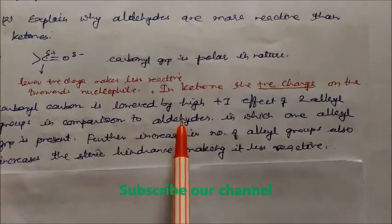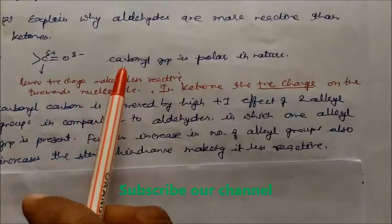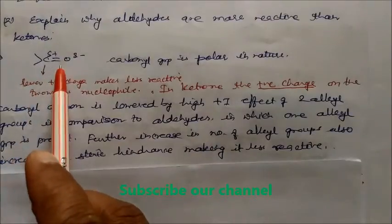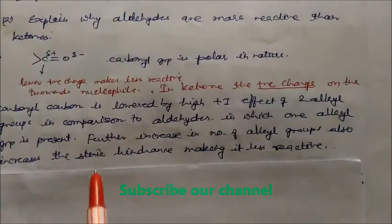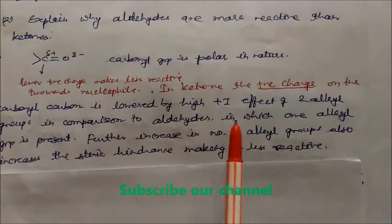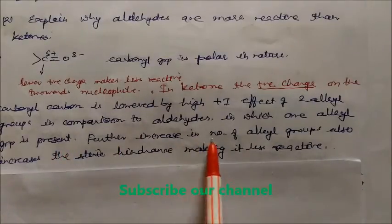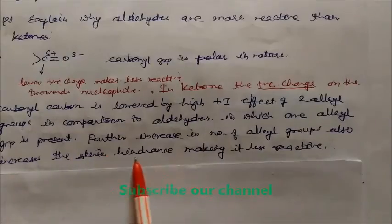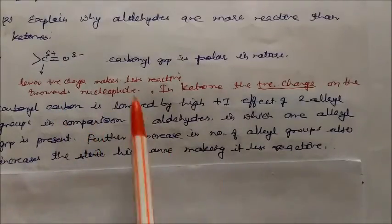Comparing aldehyde and ketone: if you have one hydrogen, the carbonyl carbon will be more reactive. But if there are two alkyl groups, there will be the +I effect of those two alkyl groups in comparison to aldehyde, which has only one alkyl group. Further, the increase in the number of alkyl groups also increases steric hindrance, which makes the compound less reactive. Therefore, ketones are less reactive than aldehydes.